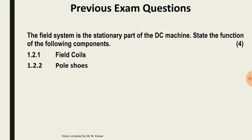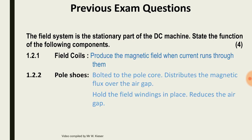The field system is the stationary part of the DC machine. State the function of the following components — field coils and pole shoes. Field coils produce the magnetic field when current runs through them. Pole shoes bolt into the pole core, distribute the magnetic flux over the air gap, hold the field windings in place, and reduce the size of the air gap.